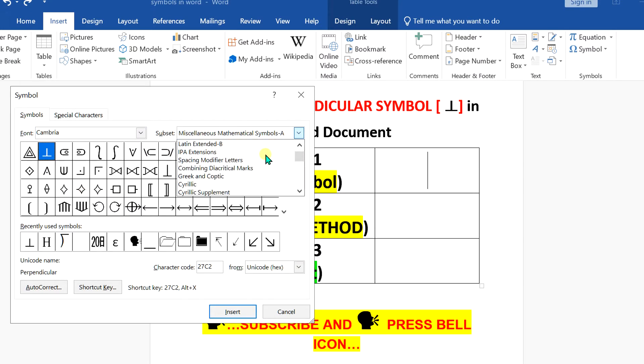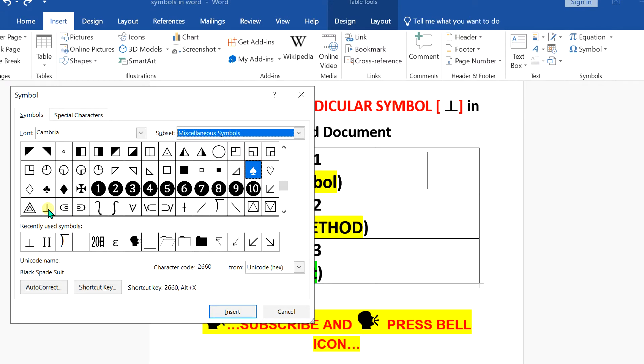Under the subsets, scroll down and you will see the option Miscellaneous Symbols. Click on this option to select it. At the bottom, you will see the perpendicular symbol.